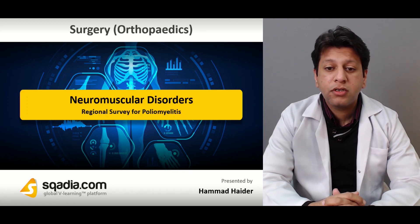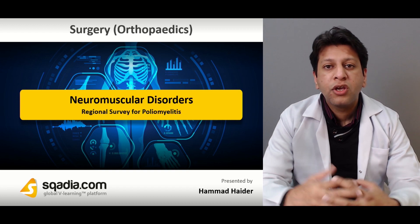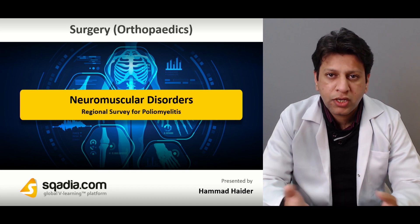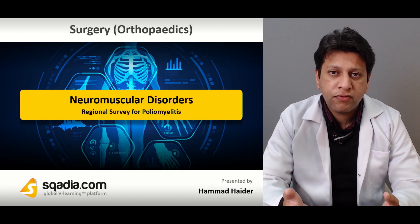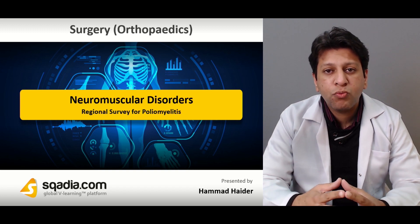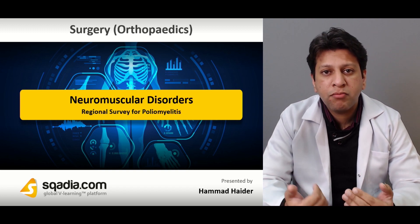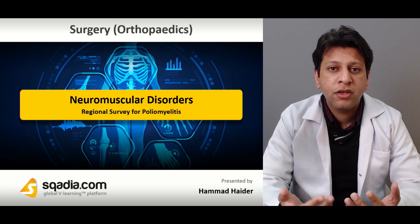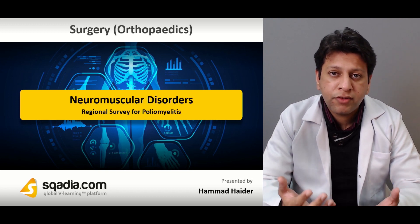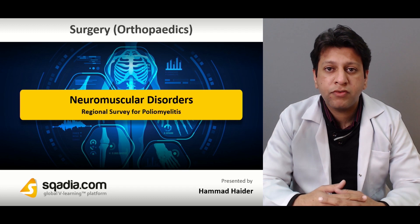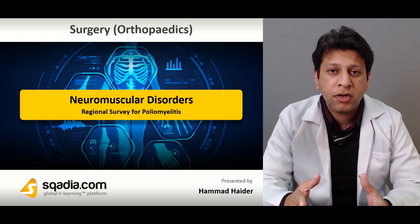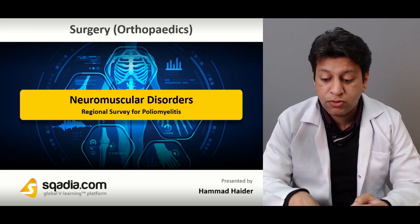Moving on to the last section on neuromuscular disorders — the regional survey for poliomyelitis. Poliomyelitis is a disease that can affect almost any muscle group and any type of muscle, so depending upon what muscles have been affected — whether muscles of the shoulder girdle, muscles causing elbow flexion and extension, small finger muscles, or muscles of the pelvic girdle resulting in abductor lurch — sometimes these paralyses can be devastating.